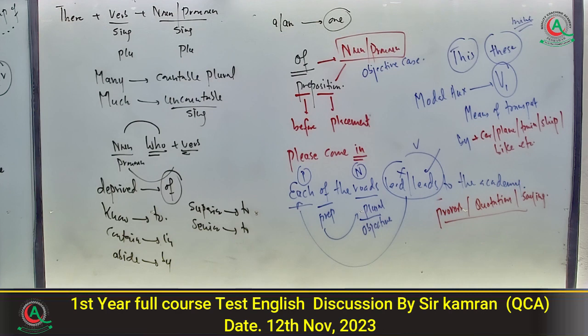Last one: synonym of 'arduous'۔ Arduous کا مطلب ہے جس میں بہت زیادہ energy اور effort لگے — difficult/strenuous۔ Option number A is the correct one۔